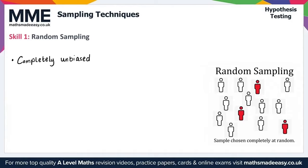A disadvantage is that the chosen sample might not represent the population very well because of random fluctuations. So it might not represent the population.